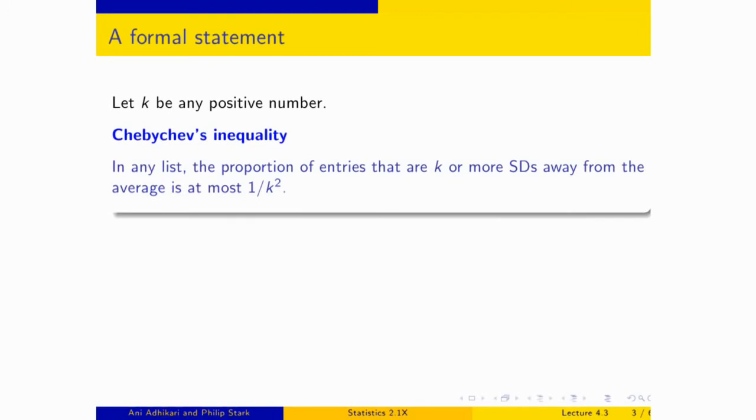So let's state this formally. We have K any positive number, and Chebyshev's inequality says in any list the proportion of entries that are K or more SDs away from the average. So away from the average means in either direction. That proportion in the two tails is at most one over K squared. So this is just writing down in English what you saw in the picture. What does it mean for a particular value of K?